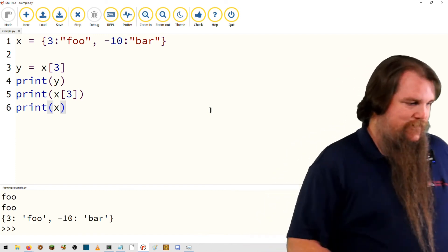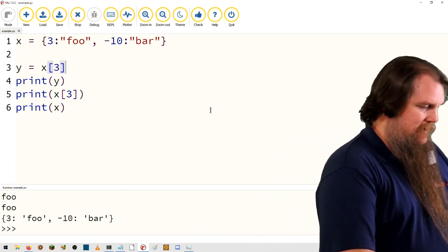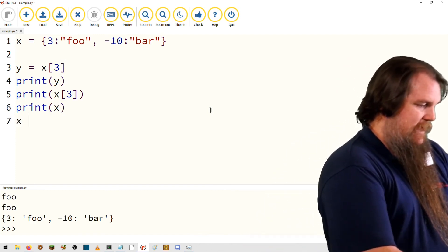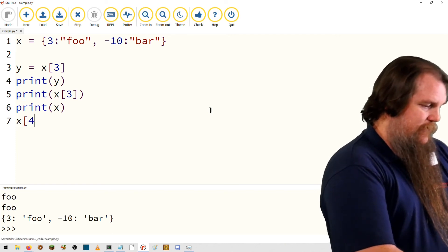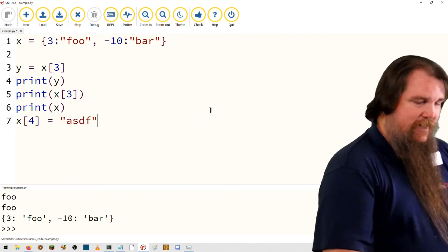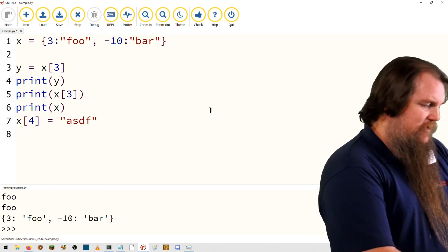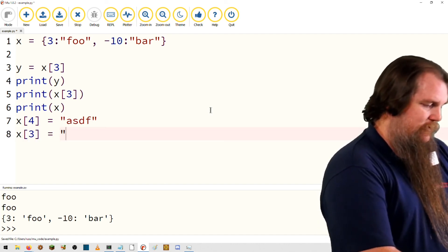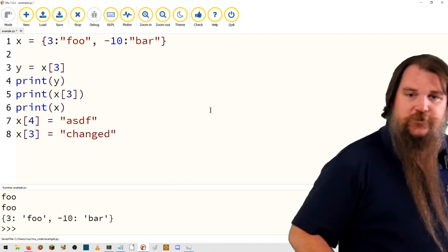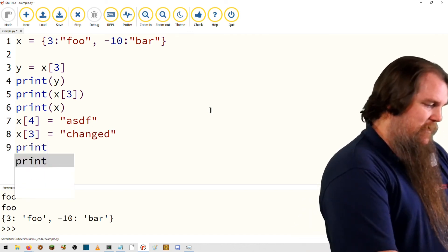We can add new values to it, so let's update something. We'll say x[4] is equal to asdf, and then let's change 3. x[3] is equal to changed. What happens if we now print x?